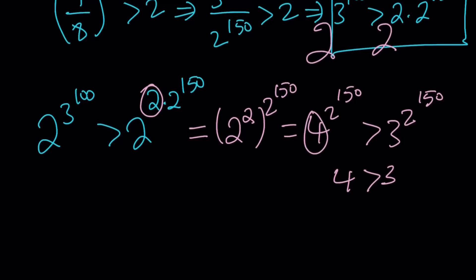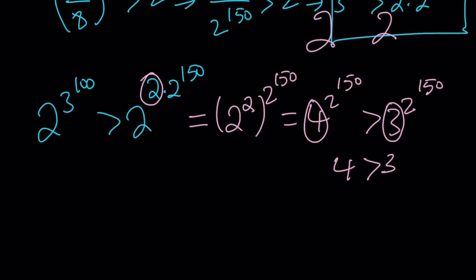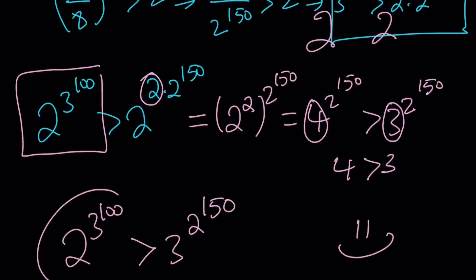And this is greater than 3 to the power 2 to the power 150 because 4 is greater than 3. Look at this. The exponents are the same. The bases are different and 4 is greater than 3. So, this result is true. And guess what that indicates? It indicates that... So, focus and do some hocus pocus. And here's the conclusion. 2 to the power 3 to the power 100 is greater than 3 to the power 2 to the power 150. And that is going to be the larger number.